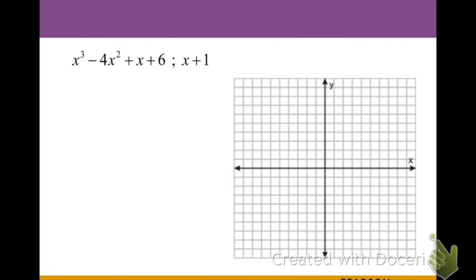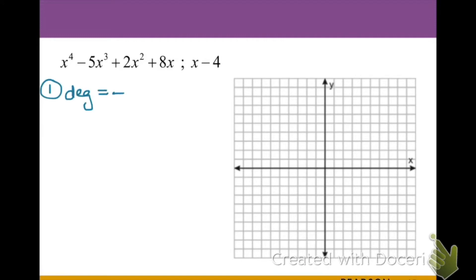Our very first example is we're going to try to graph x cubed minus 4x squared plus x plus 6, and we're given that x plus 1 is the binomial we need to show is a factor. But before we start with that, let's find its leading coefficient and degree to get its end behavior. Notice in this case that we have a degree of 3, which is odd, and a positive leading coefficient.